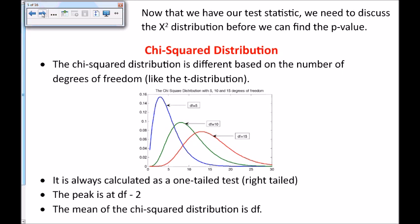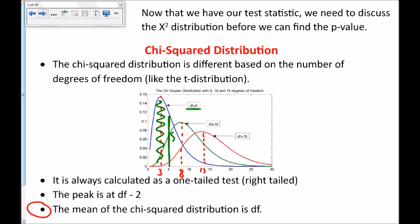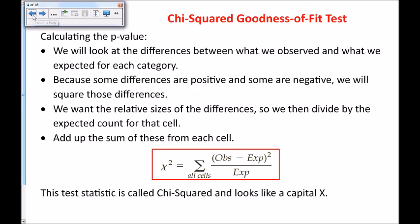Some things about the distribution: it always peaks at the degrees of freedom minus 2. The other thing you need to know is that the mean of the chi-squared distribution is the same as the degrees of freedom. What that means in your hypothesis test is that the sum of the chi-squareds will be about the same as the number of cells for your chi-squared test — that's a rule of thumb for your test statistic.